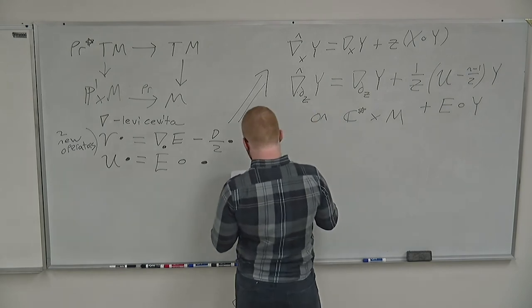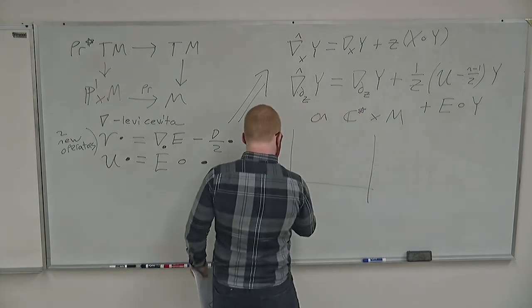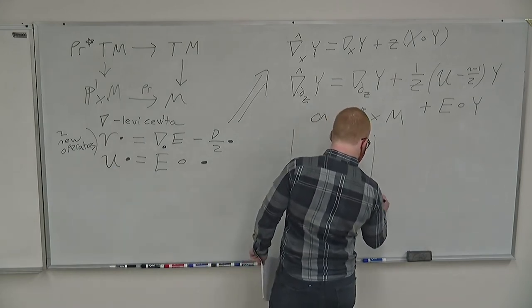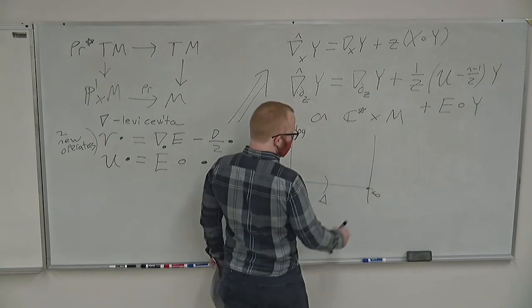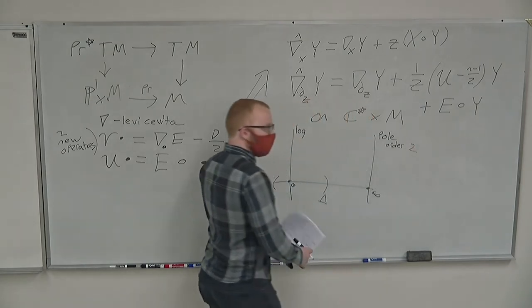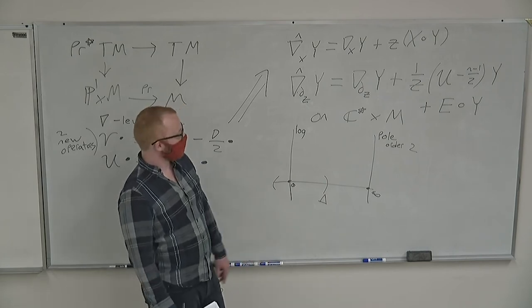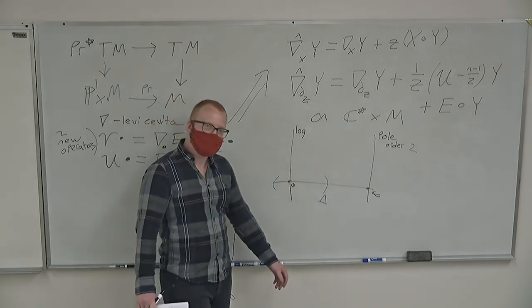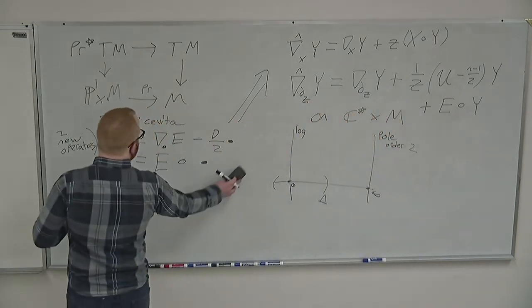From this, I can define two different connections called the first and second structure connections of my Frobenius manifold, and this will be the object that connects most of these examples. We get the first structure connection, which acts such that specifically in the Z direction the connection looks like the Levi-Civita connection plus one over Z encoding this operator. This is defined really on C* cross M, and the whole point is that it has a pole of order two at infinity and a log pole at zero. So the picture: we have a delta, and over here this is a log pole all along this line, and over here this is a pole of order two.